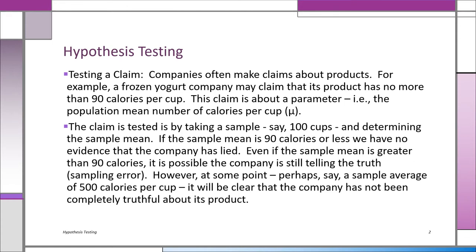We're going to use that sample evidence to test the claim. Claims, which we call a hypothesis, are always about a parameter. Suppose the sample is n equals 100 cups — that gives us the sample mean. If the sample mean is 90 calories or less, we can't accuse the company of lying. The sample evidence supports the claim, and you don't need statistics then.